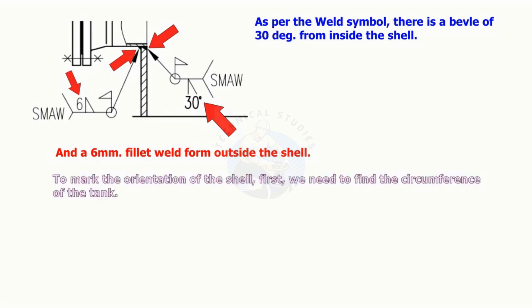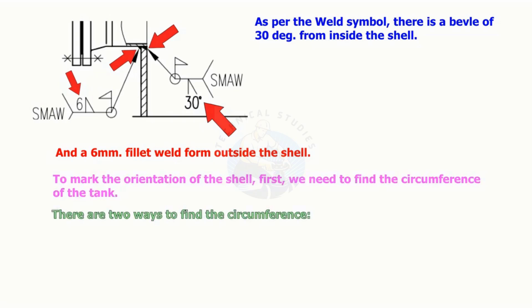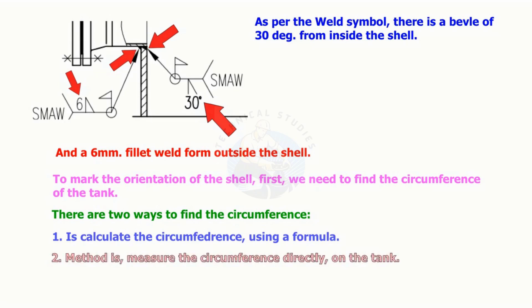To mark the orientation of the nozzle, we need to find the circumference of the tank. There are two ways to find the circumference: calculate the circumference using a formula, or measure the circumference directly on the tank.